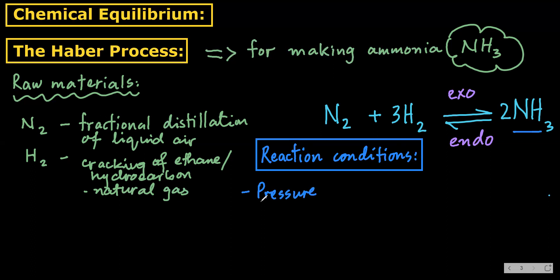Higher pressure is used - 200 atmospheres. This is why higher pressure is used: we have fewer moles on the product side. We can see four moles on the reactant side (one N2 plus three H2) and two moles on the product side (2NH3). Higher pressure favors